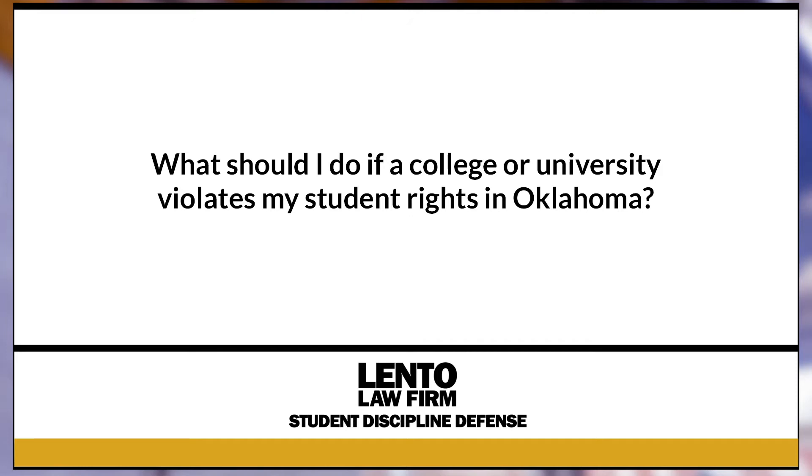What Should I Do? College students in Oklahoma have various rights under federal and state laws. If a college or university in Oklahoma violates the student's rights, there are recourses. Some of the more common areas for violations are under Title Six (discrimination in education), Title Seven (employment discrimination), Title Nine (sex discrimination), and under the Americans with Disabilities Act — the ADA — for reasonable accommodations for documented medical needs.